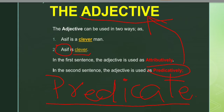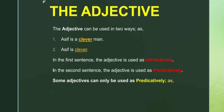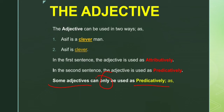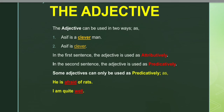Some adjectives can only be used predicatively. Look at the examples: 'He is afraid of rats' and 'I am quite well.' Here both 'afraid' and 'well' are used predicatively because they are part of the predicate. They are also modifying and telling something more about the subject 'he' or 'I,' as an adjective tells more about the noun or pronoun.